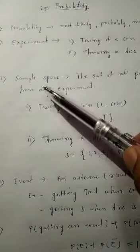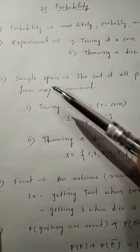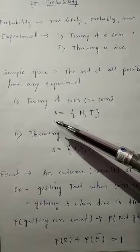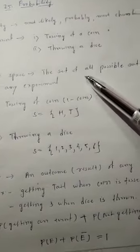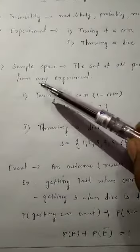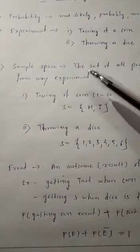The next term is sample space. What do you mean by sample space? When you go for any process or any experiment, you will come across the set of all possible outcomes from that experiment.